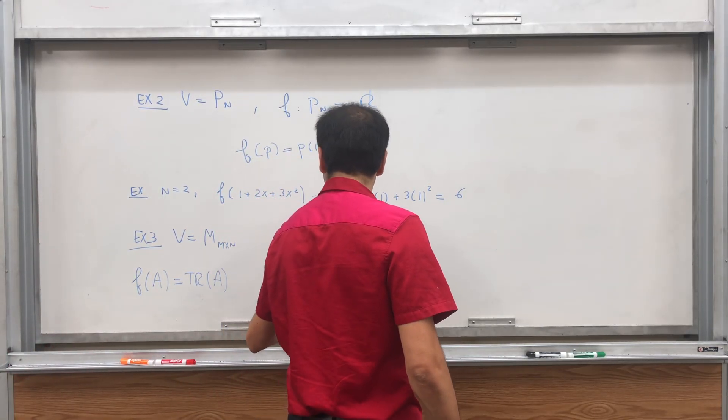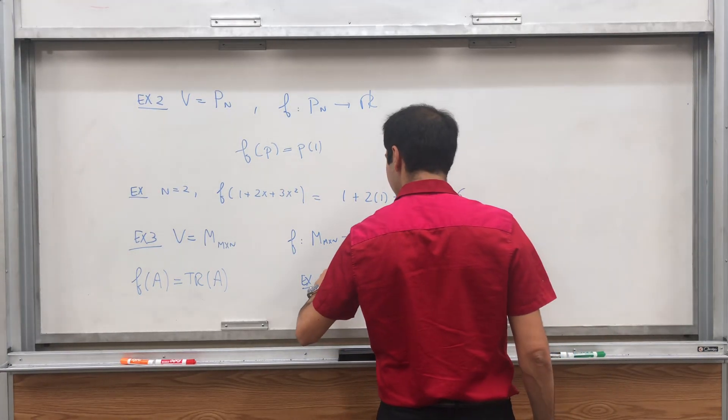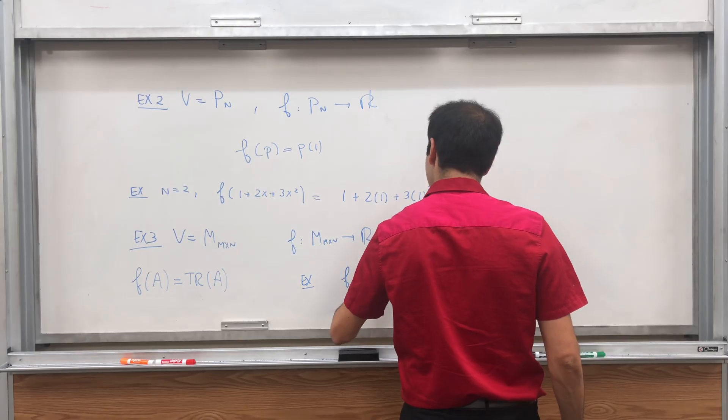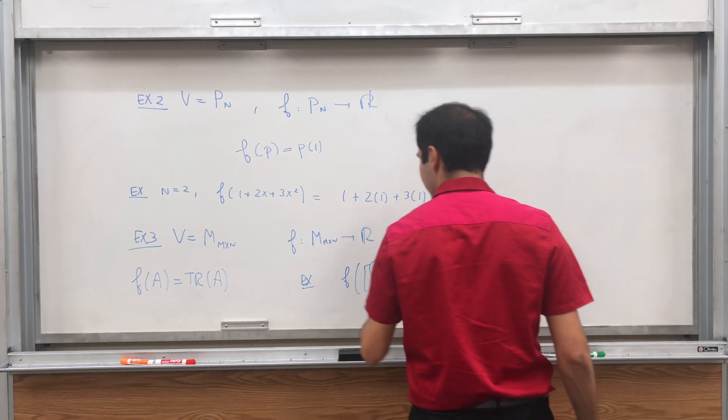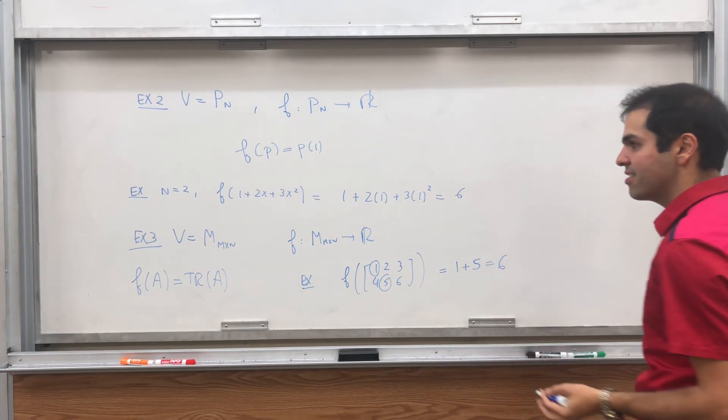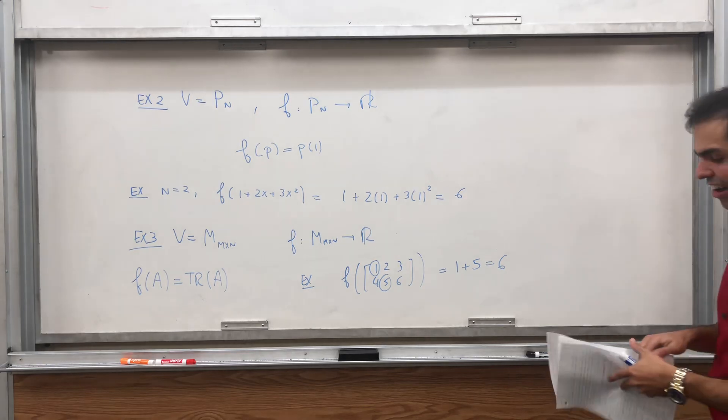So for example, again, if you want the 2 by 3 matrices, F of the matrix 1, 2, 3, 4, 5, 6, we just spit out the diagonal entries, the sum of the diagonal entries, which is 1 plus 5, which is 6. So this is also an example of a linear functional. And there are many other ones.